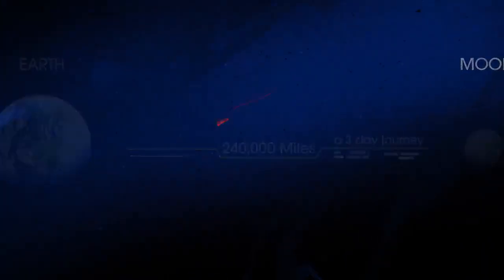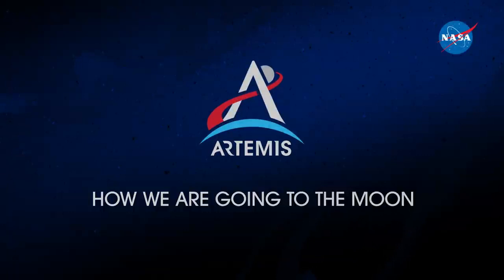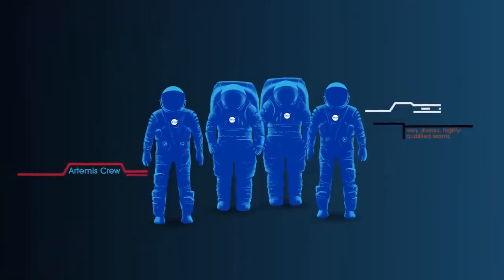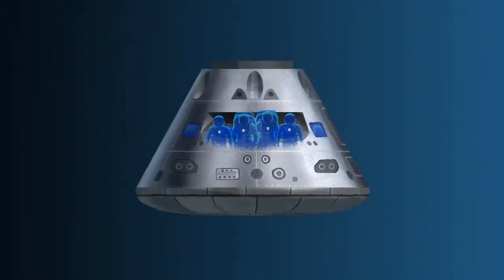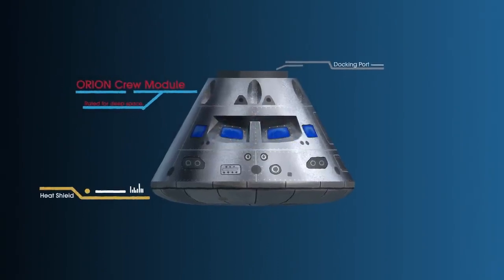So, what will an Artemis mission look like? Everything is designed and tested with our most important element in mind, the astronauts. This is their deep-space, human-rated spacecraft called Orion, built in three parts.